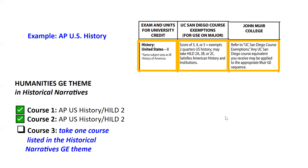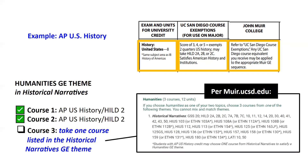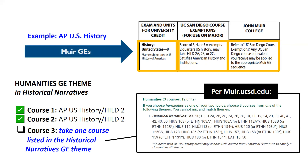For Muir GE purposes, your AP U.S. History credit counts as two courses towards the Humanities GE theme in Historical Narratives. To complete this GE area, you would need to take one more course in the Historical Narratives theme — any one of the courses listed from our Muir website. This is an example of how an exam tells us how it applies towards specific Muir GE themes, even though we don't get credit for a specific course.